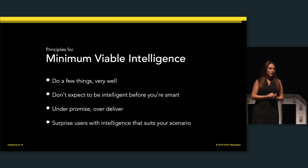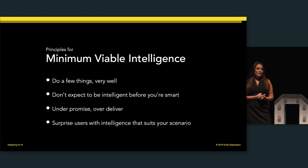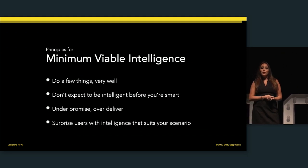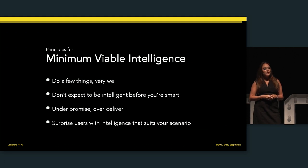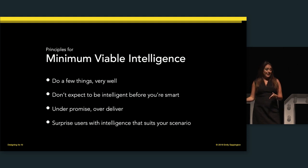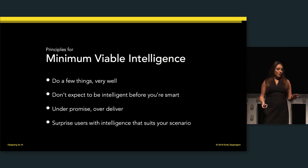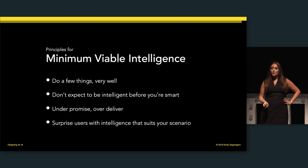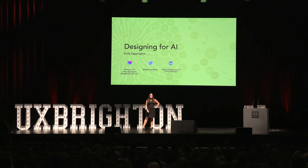In closing, we think about minimum viable intelligence — it's really about doing a few things very well. If you're working for a startup, this is critical: don't expect to be intelligent before you're competent. Make sure there are no delays, no lags, no issues in order to deliver on AI. Always under-promise and over-deliver, and surprise users with intelligence that suits your scenario.